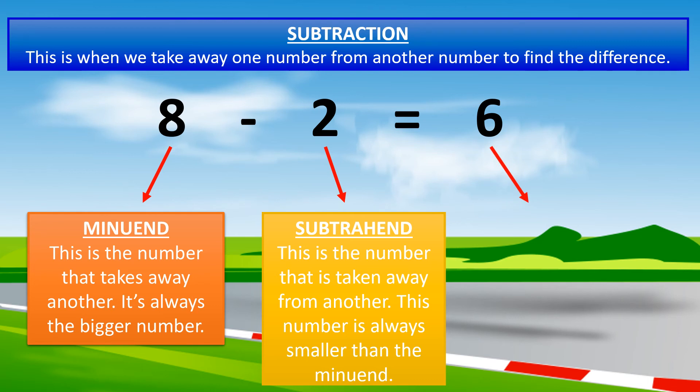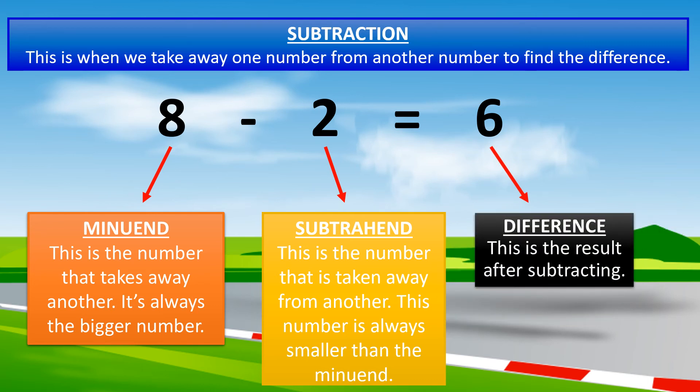Now, the number six in this example is our difference. The difference is the result after subtracting. I think I got it. In subtraction, a minuend takes away a subtrahend. That gives us the difference. You've got it.